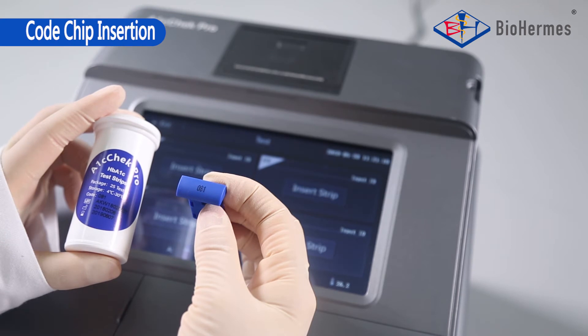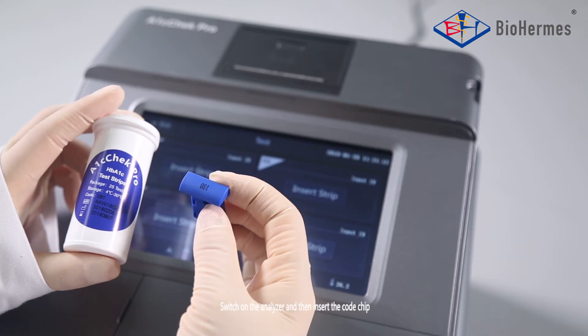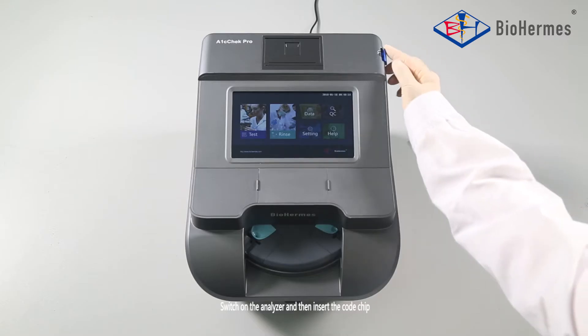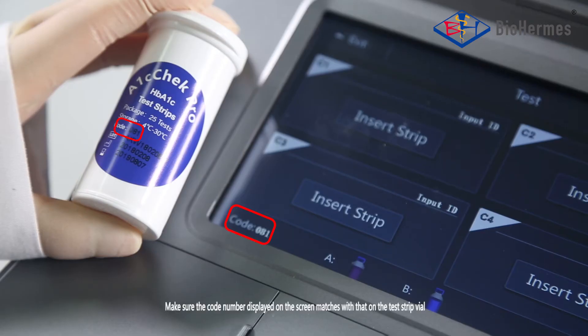Code Chip Insertion. Make sure the code number on the code chip matches with that on the test strip vial. Switch on the analyzer and then insert the code chip. Make sure the code number displayed on the screen matches with that on the test strip vial.